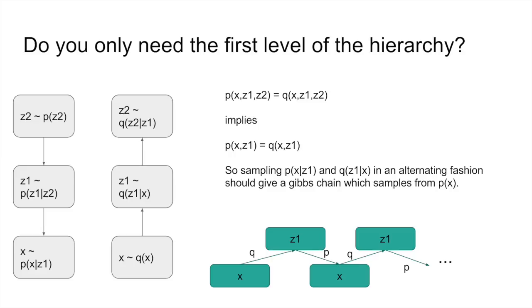The basic critique presented in this paper is that a block Gibbs sampling chain between X and the lowest level of latent variables is sufficient to sample from the joint if the model is trained to optimality. Now if the model is optimal, then the generator distribution P and the inference distribution Q match, which means that the lowest level, the joint between Z1 and X also matches. So as the argument goes, only the lowest level is needed to generate and the higher levels are redundant.